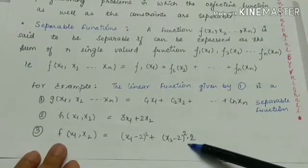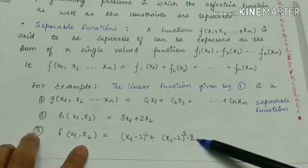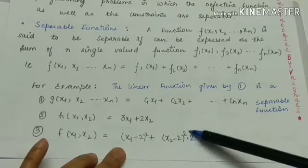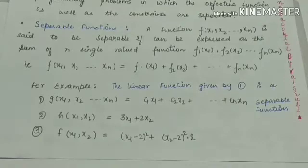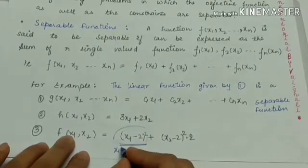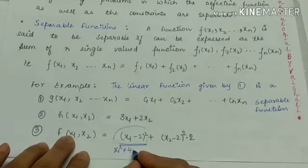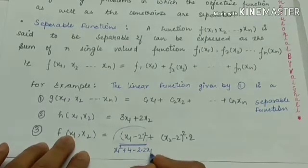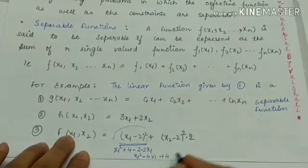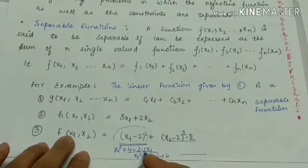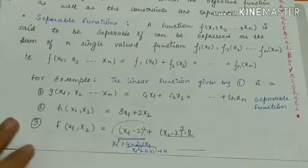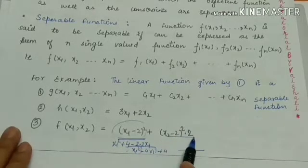A third example: f(x1, x2) = (x1 − 2)² + 2(x2 − 2)². Expanding gives terms in x1 and x2 separately. We collect all x1 terms together, all x2 terms together, and constants together, then write this in proper separable form. We will study this in detail under the reducible-to-separable-form concept.